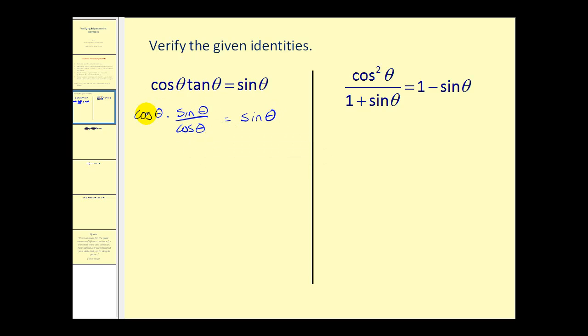And it's probably helpful if we write cosine theta over one, and then it becomes very obvious how this can be simplified. We have a common factor of cosine theta, and now we've verified our identity. Sine theta equals sine theta.